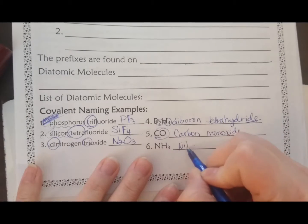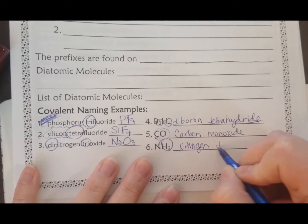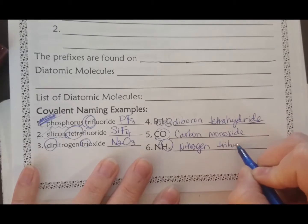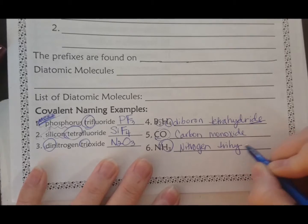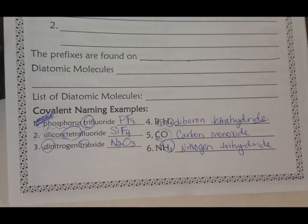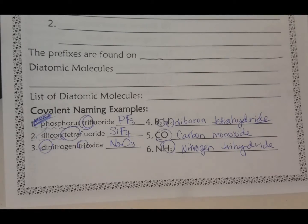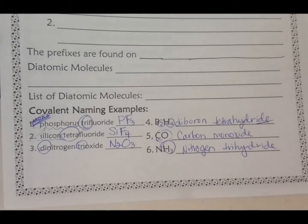N is nitrogen. There's three H's, so that's tri. Now hydrogen's an interesting one - it's hydride. So this is so easy, I feel like you should be able to get it from here, but if not, let me know and I'll help you.